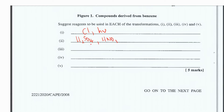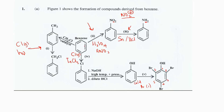In part three we take the nitrobenzene formed in part two and reduce it to form aminobenzene. We need a reducing agent — tin in HCl (hydrochloric acid) — for this reaction. In part four, going from benzene to chlorobenzene, we again need elemental chlorine gas (Cl₂).